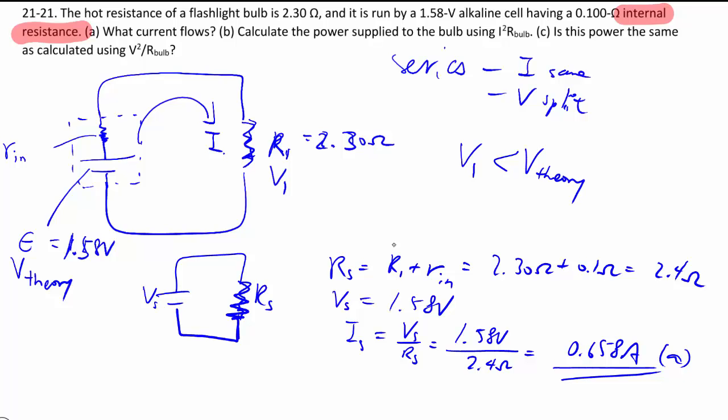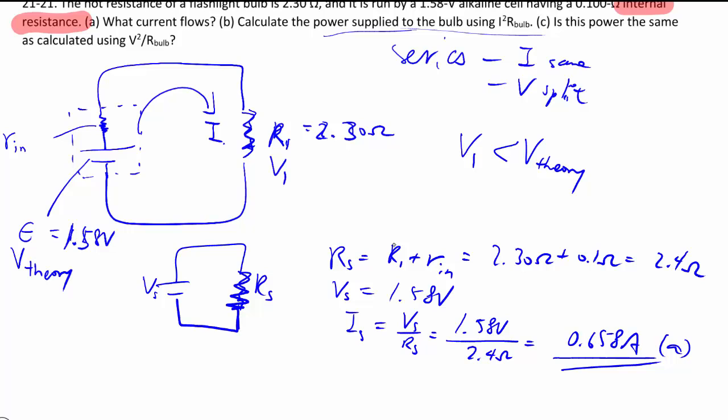Then we want to calculate the power supplied to the bulb. And you can do that in three ways. You can use P equals IV or you could use Ohm's law to further expand into I square R or V square over R. And we'll explicitly in this time plug in the different numbers to see that the answer should be exactly the same. No reason for it not to be.